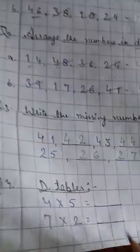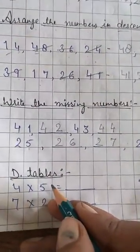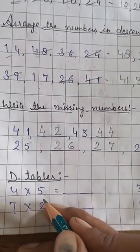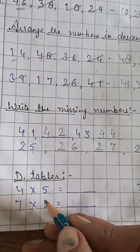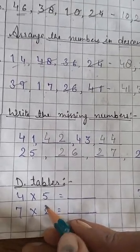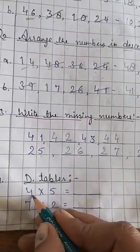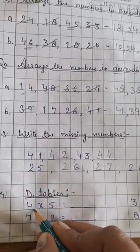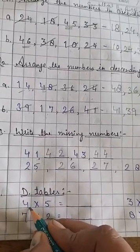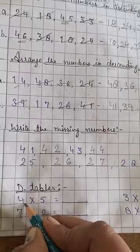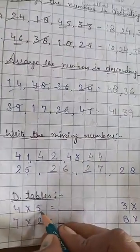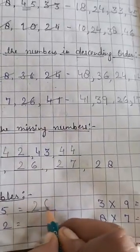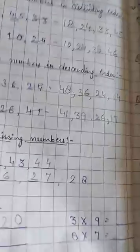Yes. Now, the tables. You know it very well. Tables. Yes. Table of 4 till 5. 4 ones are 4. 4 twos are 8. 4 threes are 12. 4 fours are 16. 4 fives are 20. 20. Next is,